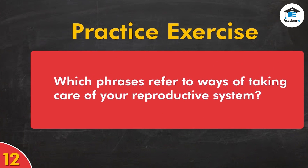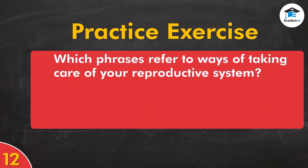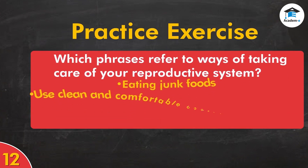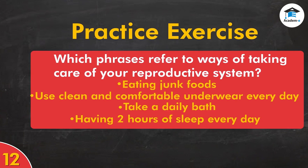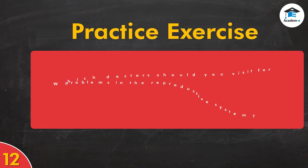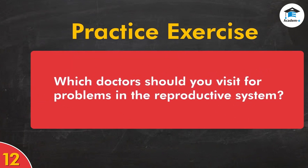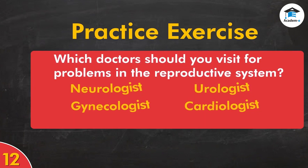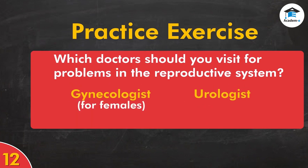Question 4: Which phrases refer to ways of taking care of your reproductive system? Answer: Use clean and comfortable underwear every day; take a daily bath. Question 5: Which doctors should you visit for problems in the reproductive system? Answer: Gynecologist for females; urologist for males.